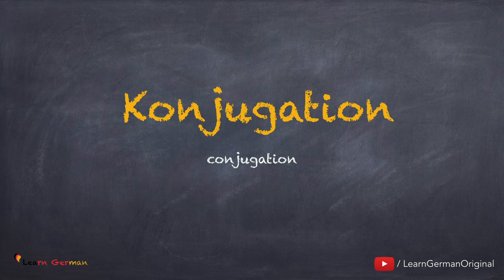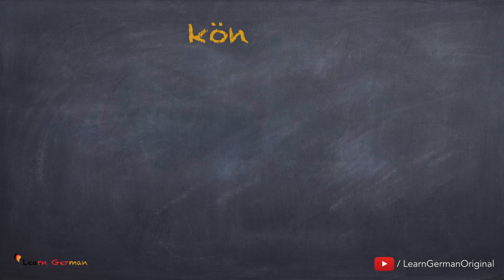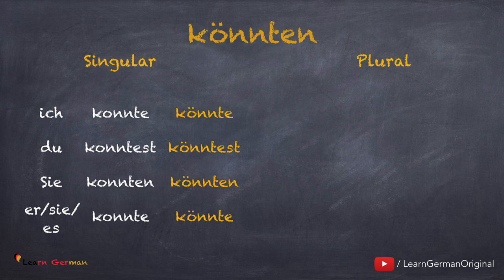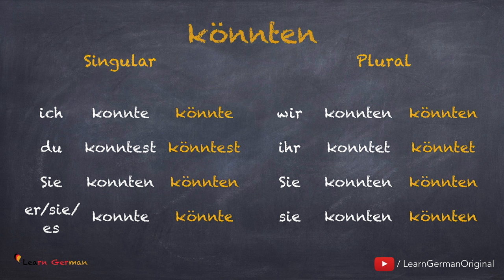Wir schauen uns jetzt die Konjugation von Könnten und Würden an. Es ist wichtig, dass man die Präteritumform gut kennt. Hier ist die Konjugation für Könnten: ich könnte, du könntest, sie könnten, er/sie/es könnte, wir könnten, ihr könntet, sie/Sie könnten. Hier kann man auch die Präteritumform sehen. In Präteritum gibt es keine Umlaut, aber in der Konjunktiv 2-Form gibt es eine Umlaut.